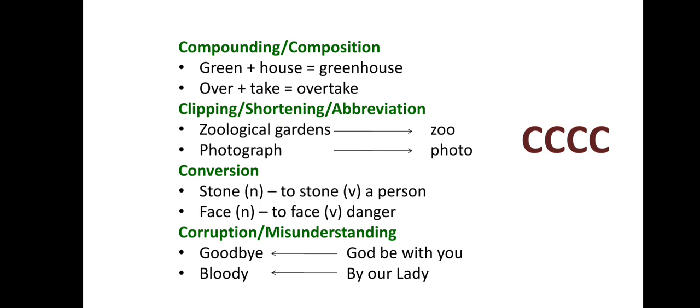The last process is Corruption or Misunderstanding. In this process, words are formed by a mistaken understanding of their origin. For example, the term 'goodbye' is the corrupted version of 'God be with you,' and 'bloody' is the corrupted version of 'By Our Lady.' These are words whose original meanings have been lost or distorted over time — that is Corruption.